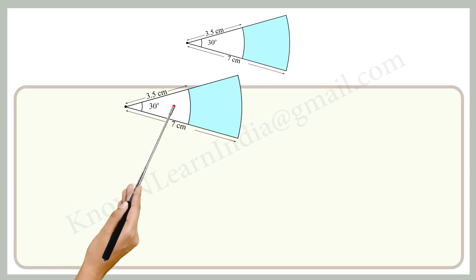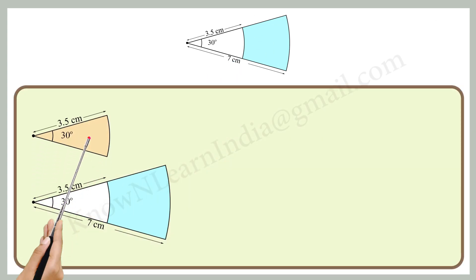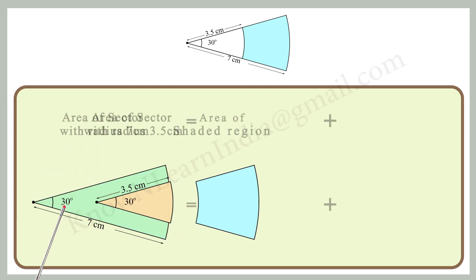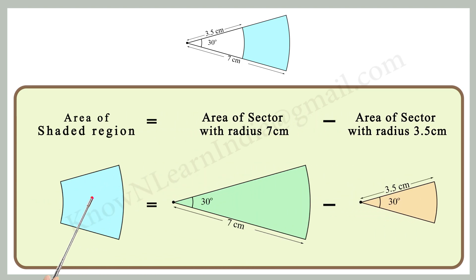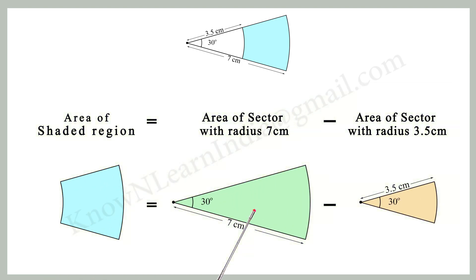Here we have two sectors with radius 3.5 centimeter and 7 centimeter and an angle measuring 30 degrees. Let's see how we can find the answer. We know that the area of the sector with radius 7 centimeter is equal to area of the sector with radius 3.5 centimeter plus area of the shaded region. Therefore, the area of the shaded region is equal to area of the sector with radius 7 centimeter minus area of the sector with radius 3.5 centimeter.